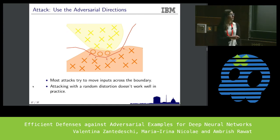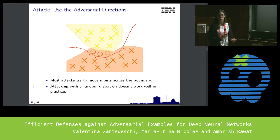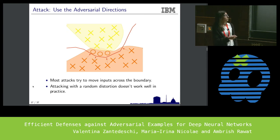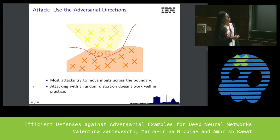What an attacker tries to do is apply the smallest perturbation to find these adversarial regions and make the adversarial example undetectable visually and statistically. A random transformation would not guarantee that the resulting image lies in the adversarial region, nor that the perturbation is minimal, which would result in detectable adversarial examples.